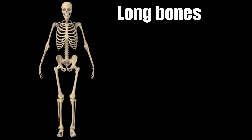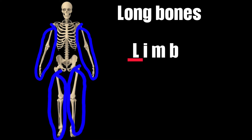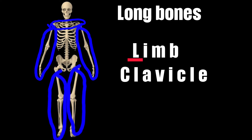Long bones are called long bones because they are longer than they are wide. The trick in remembering this is to use the letter L to remember LIMP. This will help you remember that most of the long bones are found in the arms and in the legs. You can also use the L found in clavicle to remember that clavicle is among the long bones. Clavicle actually has two L's, and clavicle is also called the collar bone, which also has two L's in it. So the arms and legs — the limbs — starting with L, and the clavicle or collar bone with two L's, are all long bones.